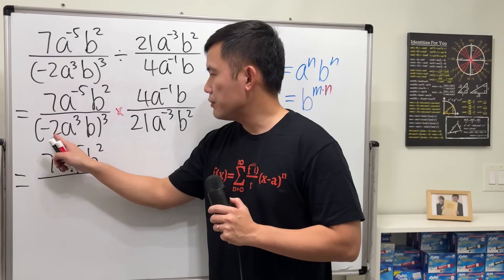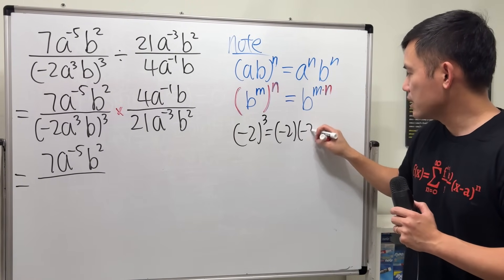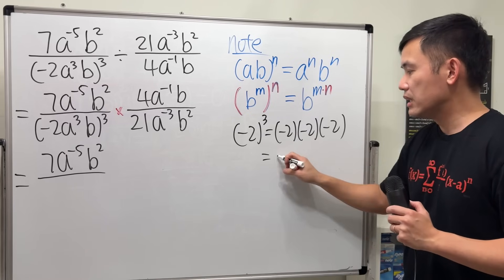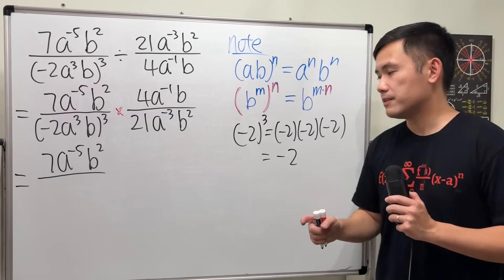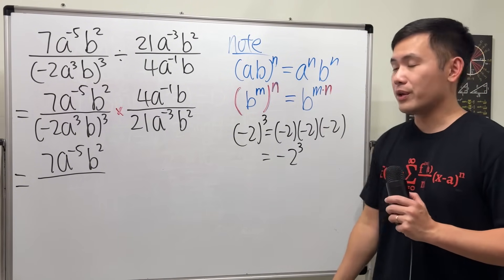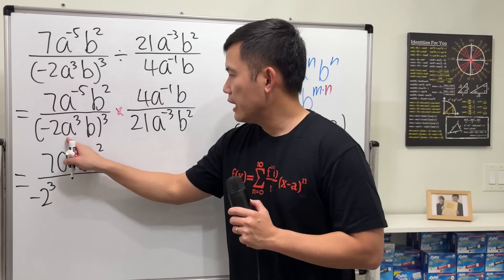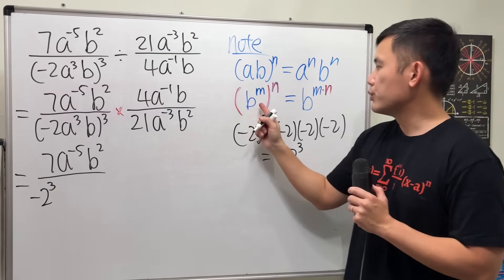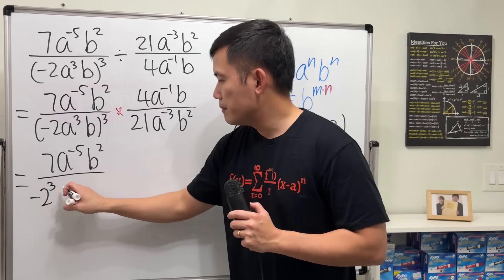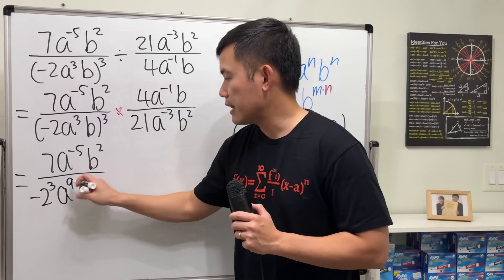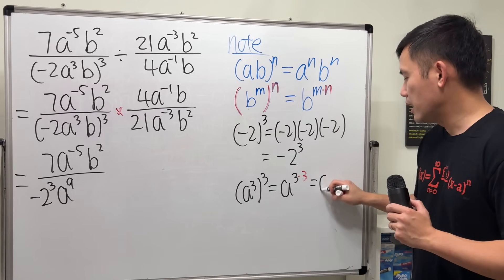Here we go. We have negative 2, and then raise it to the third power. Negative 2 to the third power means negative 2 times negative 2 times negative 2, so the result is still going to be negative. We're going to keep it as the prime factor form, so negative 2 to the third power stays as negative 2 to the third. Next, a to the third power, and then the third power — we multiply the exponents: 3 times 3 gives us a to the ninth power.